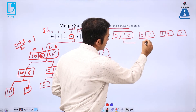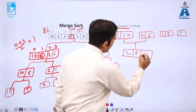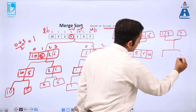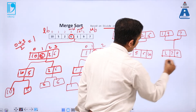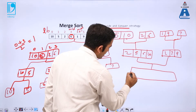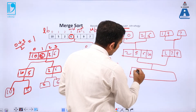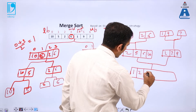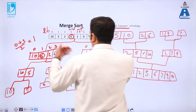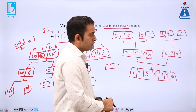Now we combine two arrays at a time in a sorted manner. Merging [10, 5] gives [5, 10], and [2, 6] stays [2, 6]. Then merging those gives [2, 5, 6, 10]. Similarly [1, 9] and [7] merge to [1, 7, 9]. The final merge produces the fully sorted array: 1, 2, 5, 6, 7, 9, 10. This is the merging phase.